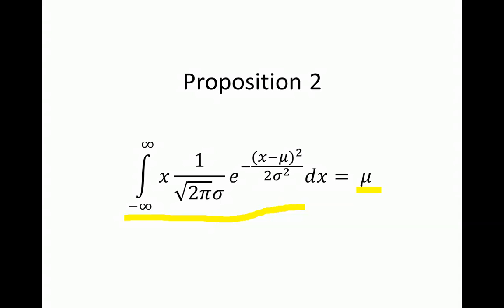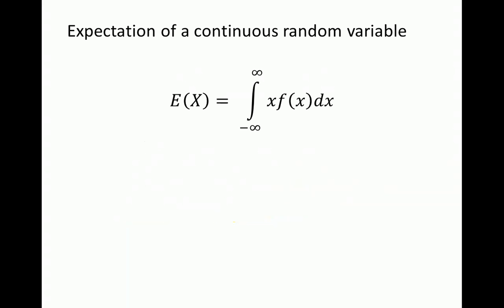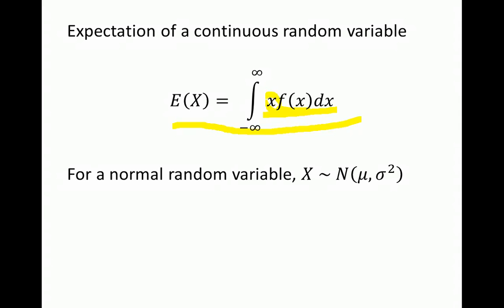We're talking about the normally distributed random variable X with mean μ and standard deviation σ. The expectation of a continuous random variable is expressed as the integral of x times its probability density function f(x), summed over all possible values of x from negative infinity to infinity.